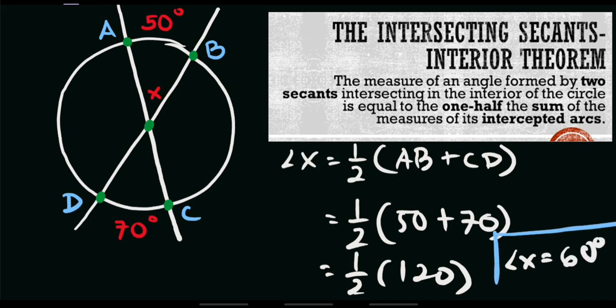So if this angle equals 60 degrees, automatically its vertical angle — its opposite angle — is also 60 degrees. They are considered vertical angles, and vertical angles are always congruent or equal.